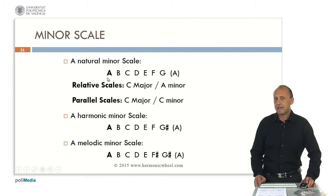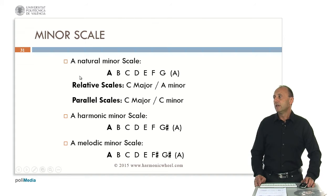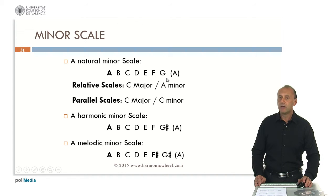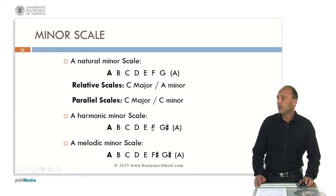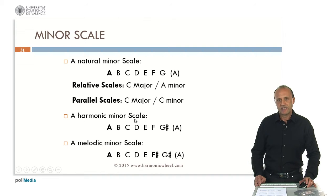The natural minor scale has a little drawback, which is that from the last note G to the next tonic A, there is a whole step instead of a half step as in a major scale. This means that when we play this scale and we reach the next tonic, we don't have the psychological perception of having arrived at the end of the scale. So, to avoid this issue, it is usual to raise the note G by a half step, thus obtaining the so-called harmonic minor scale, which is the most used minor scale.